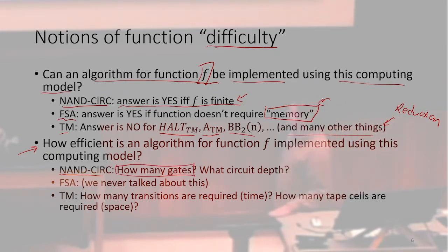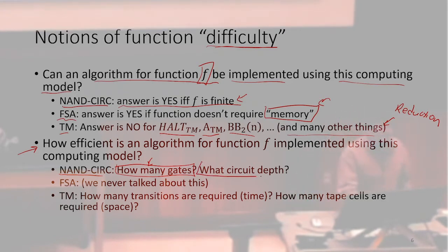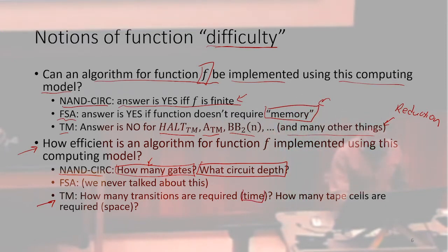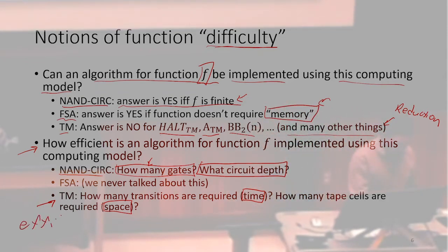If we wanted to get a little bit more fine-grained about how difficult it is to compute a function, we could ask: what is the optimal number of gates required to compute that function? Or what is the shortest depth of the circuit? We could ask these questions about NAND circuits to get an idea for how difficult it was to compute this function. For Turing machines, the next thing we're going to talk about — typically the way we're going to measure efficiency — is using two metrics: the first being time, the second being space. Whenever we're looking at efficiency, we're always counting something.